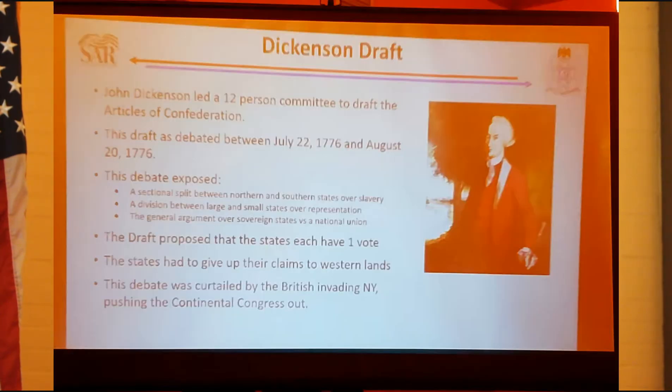Right after the Declaration of Independence was written, they put together a 12-man committee led by John Dickinson to write the Articles of Confederation, which essentially is like the League of Nations document, tying little nations together for a common cause. They wanted to do this because the Europeans wouldn't look at us as a country unless we appeared to give a united front.